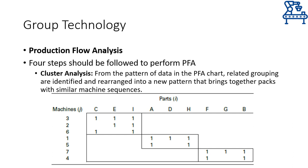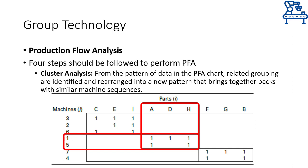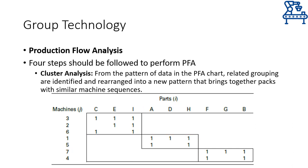The last step of cluster analysis produces clusters based on the data represented in the PFA chart. For example, parts A, D, and H all go through machine 1, and parts A and H additionally go through machine 5 — that is why they are grouped together. So a part family of parts A, D, and H is generated along with a machine cell comprising machines 1 and 5 only. Similarly, other clusters are made that result in additional part families and machine cells.